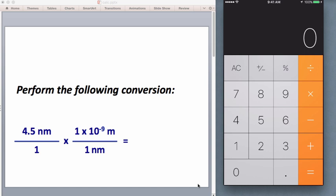At first glance, it appears you'll be unable to enter a number as small as 1 times 10 to the minus 9. But rotating your iPhone reveals a number of scientific calculator features.